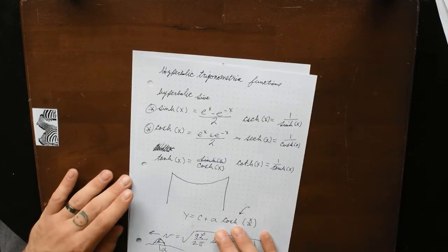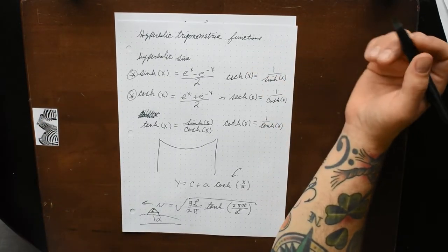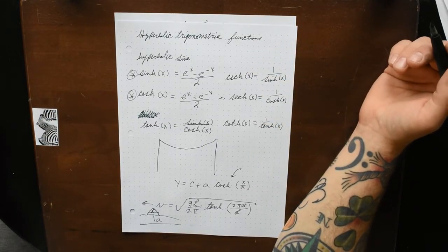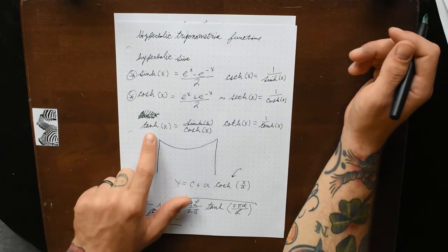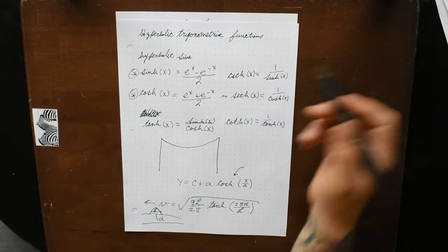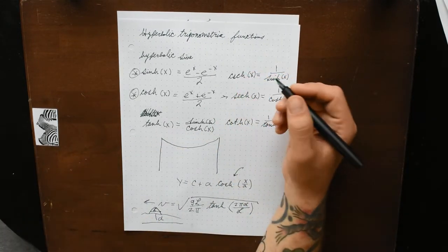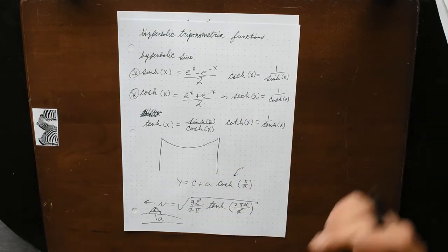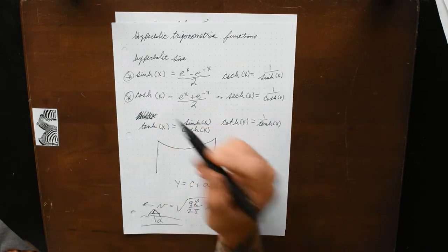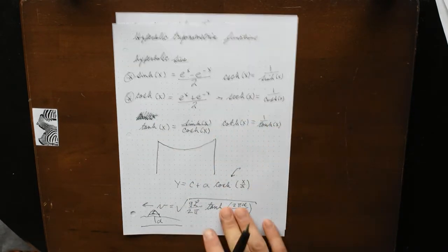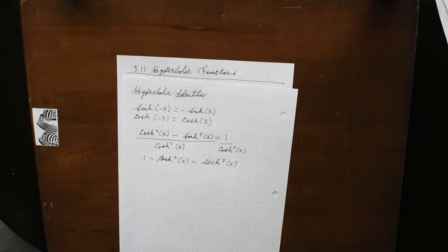I've heard these called 'cinch,' 'kosh,' 'siech' — people use a ch sound when verbally communicating these ideas. I say 'sine hyperbolic,' 'cosine hyperbolic.' So we have identities.